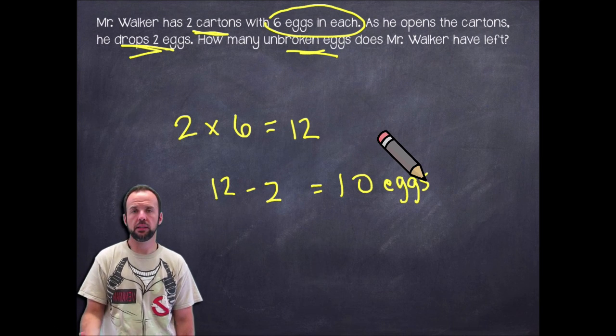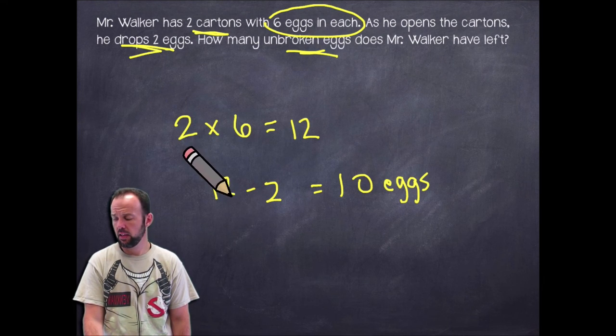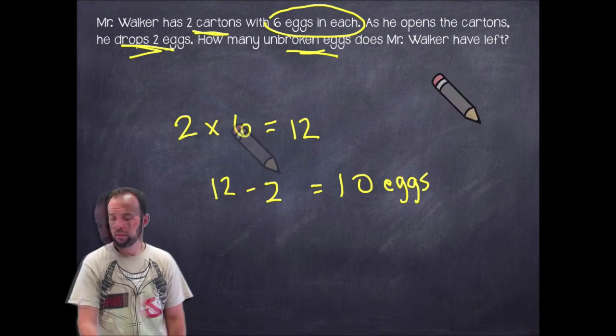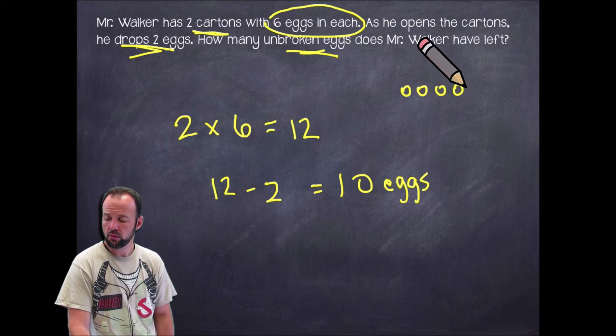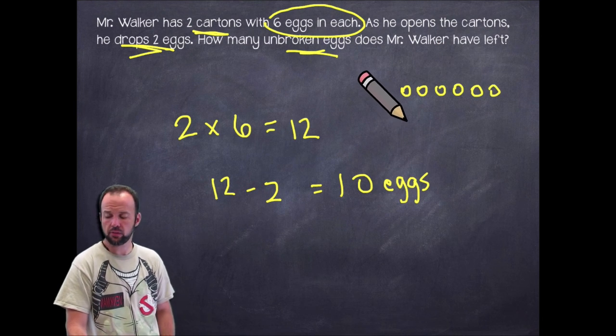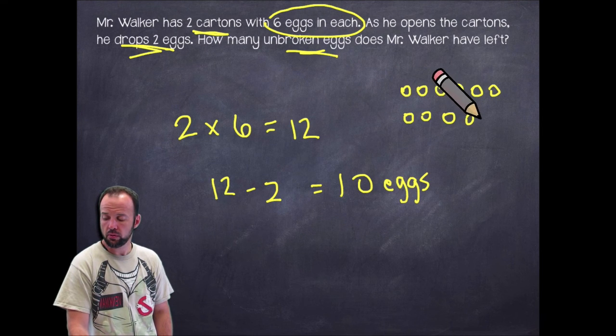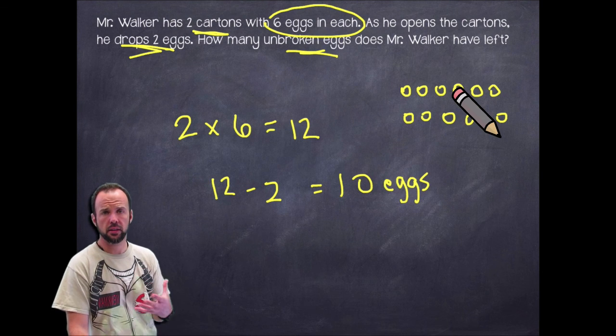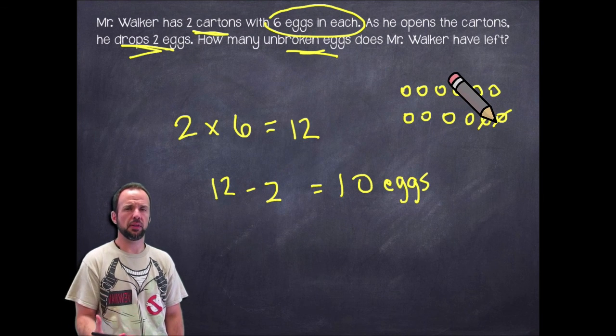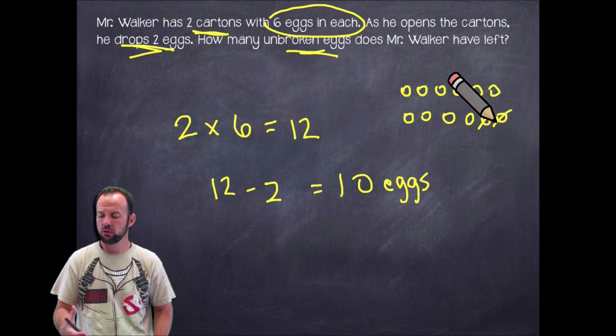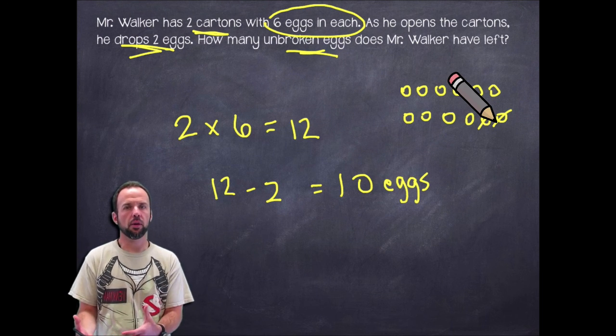So in this problem here, we're dealing with two equations. Two equations, basically. Two times six, and then 12 minus two. So I'm just going to draw a picture here to help me illustrate this a little bit. So let's see - one, two, three, four, five, six. That's like the one carton of eggs. And if I put six more there - one, two, three, four, five, six - there's my two cartons of six eggs. And then I'm going to just cross out two of these because those will represent the two that I dropped. So in this picture, in this illustration, I was able to kind of sum up all the steps I took into one picture.